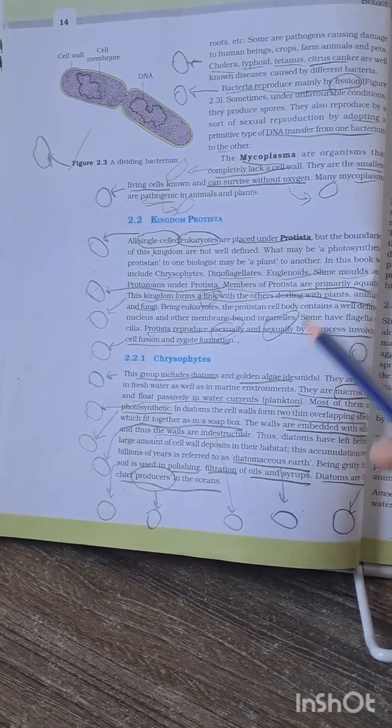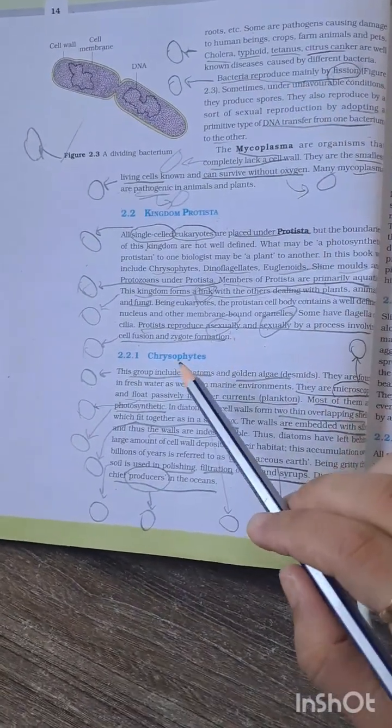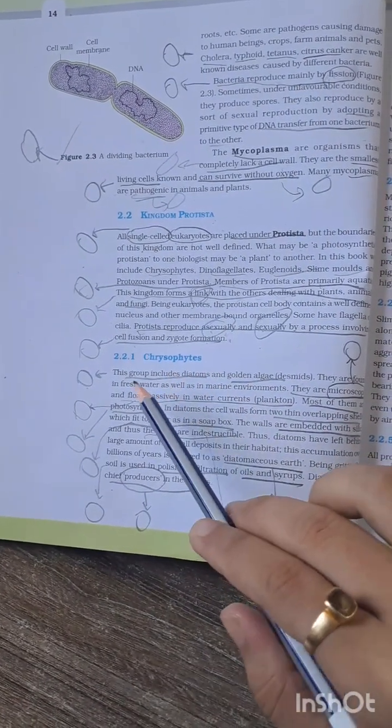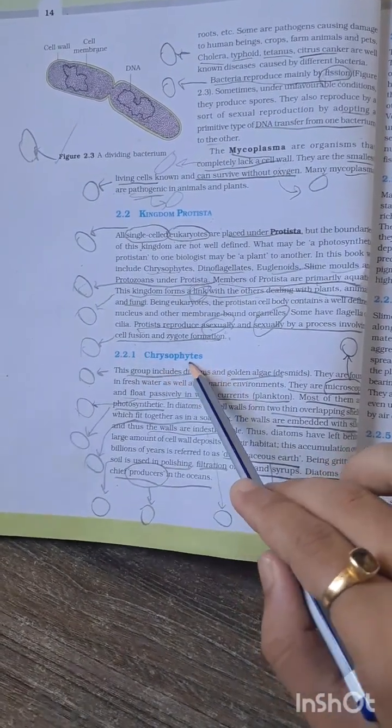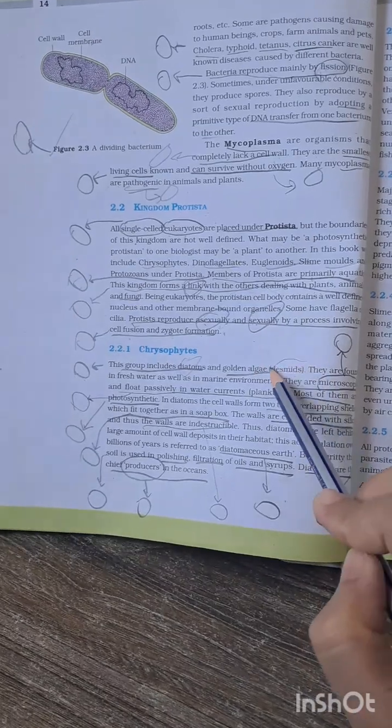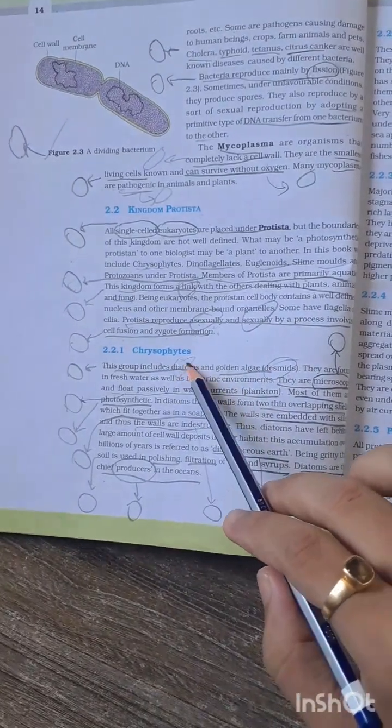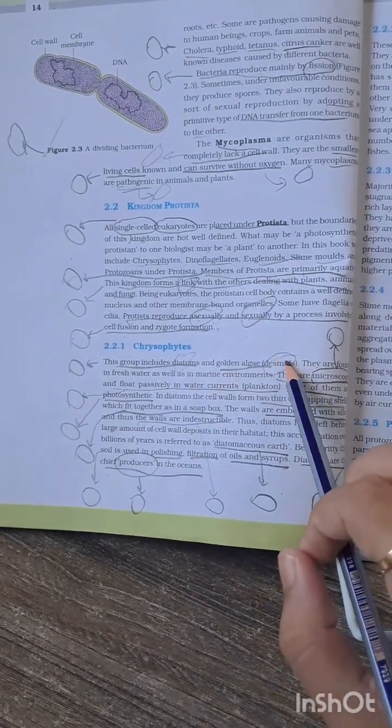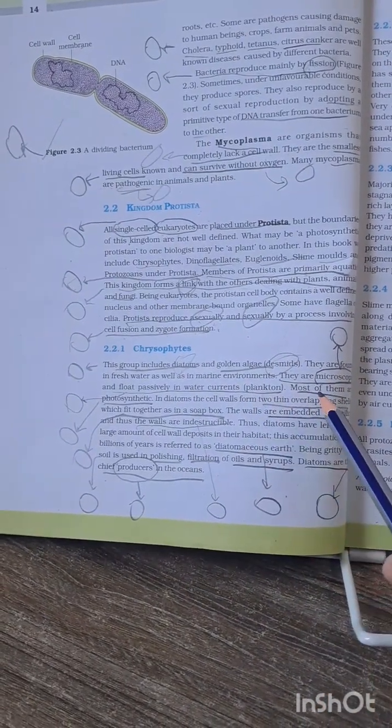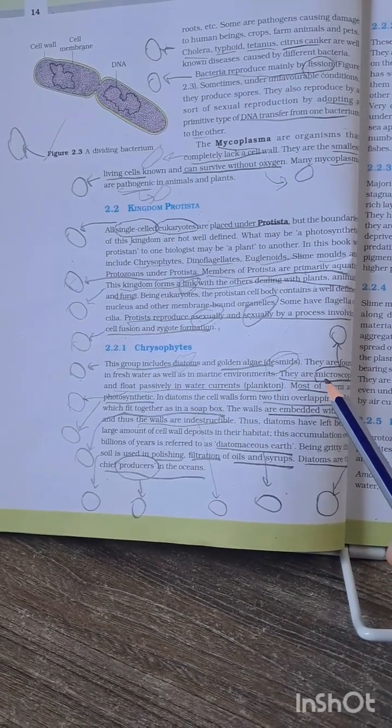Now, Chrysophytes - the most probable MCQ is that this group includes diatoms and golden algae, that is desmids. They have asked this many times: what does Chrysophytes include? Diatoms and desmids.